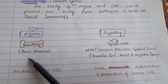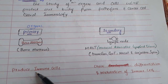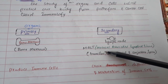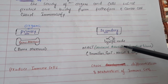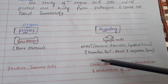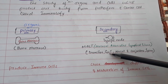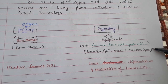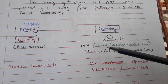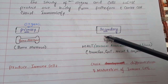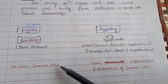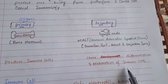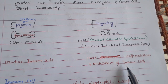The primary organ is the bone marrow, which actually produces the immune cells. Secondary organs include the lymph node, mucosal associated lymphoid tissue present in the bronchus, gastrointestinal system, nasal and conjunctival mucosa, as well as the spleen and thymus. These are called the secondary immune organs, and they lead to differentiation and maturation of the immune cells.